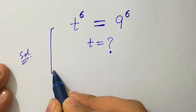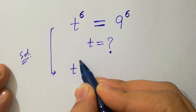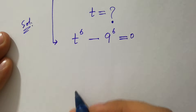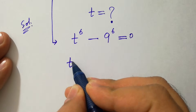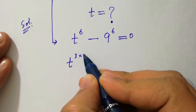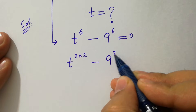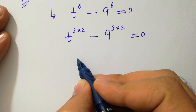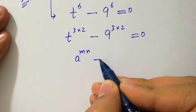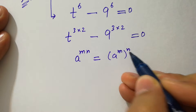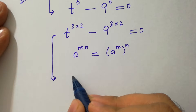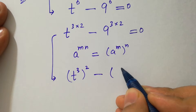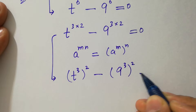This problem can be written as t to the power 6 minus 9 to the power 6 equals 0. It can be written as t to the power (3×2) minus 9 to the power (3×2) equals 0, since 3 times 2 is 6. Using the rule that a to the power mn equals (a to the power m) to the power n, this becomes (t³)² minus (9³)² equals 0.